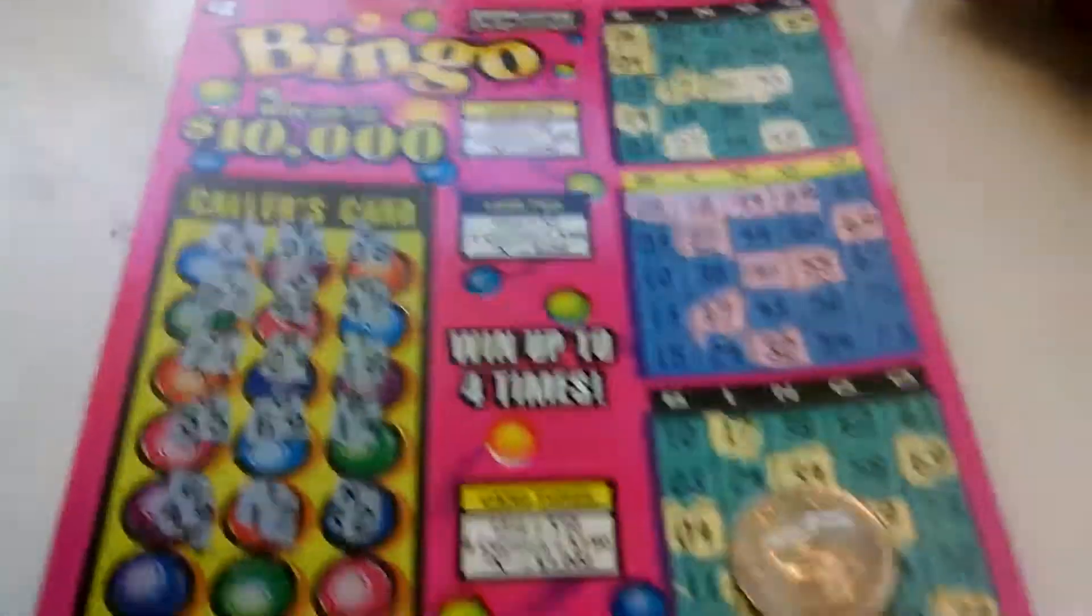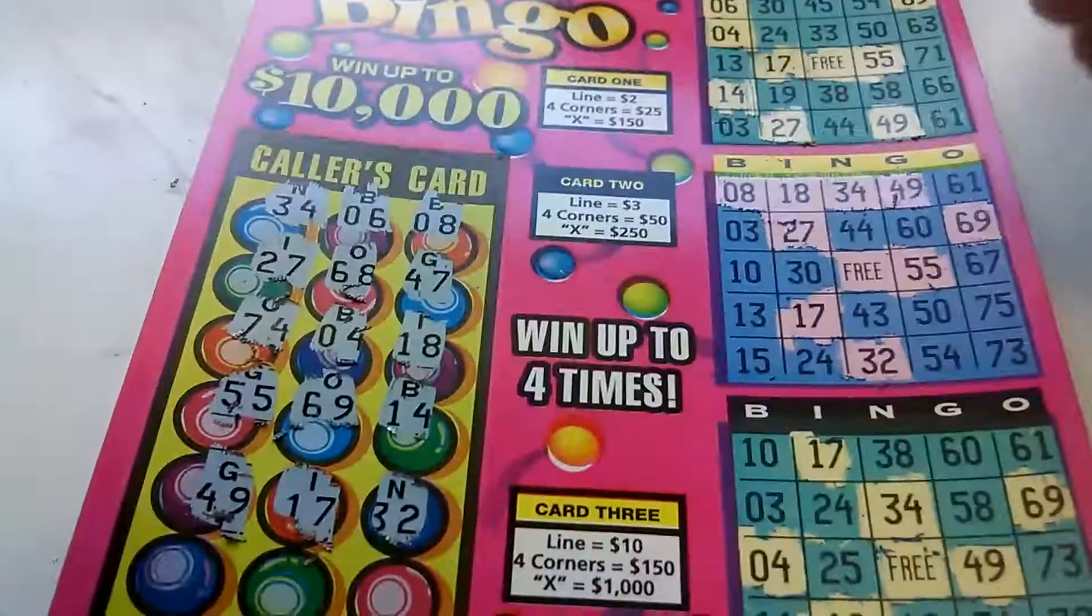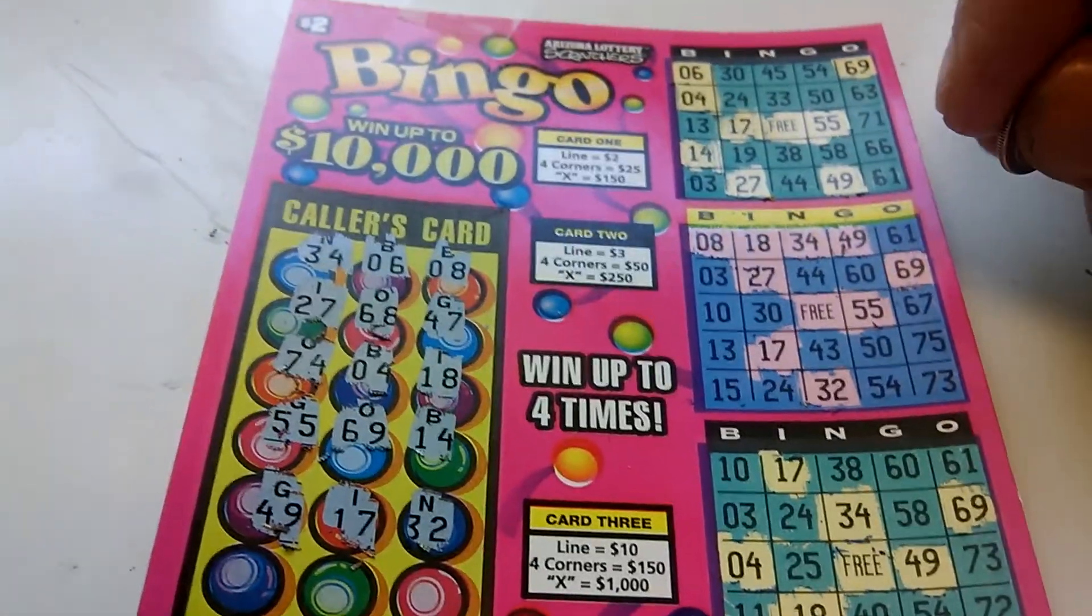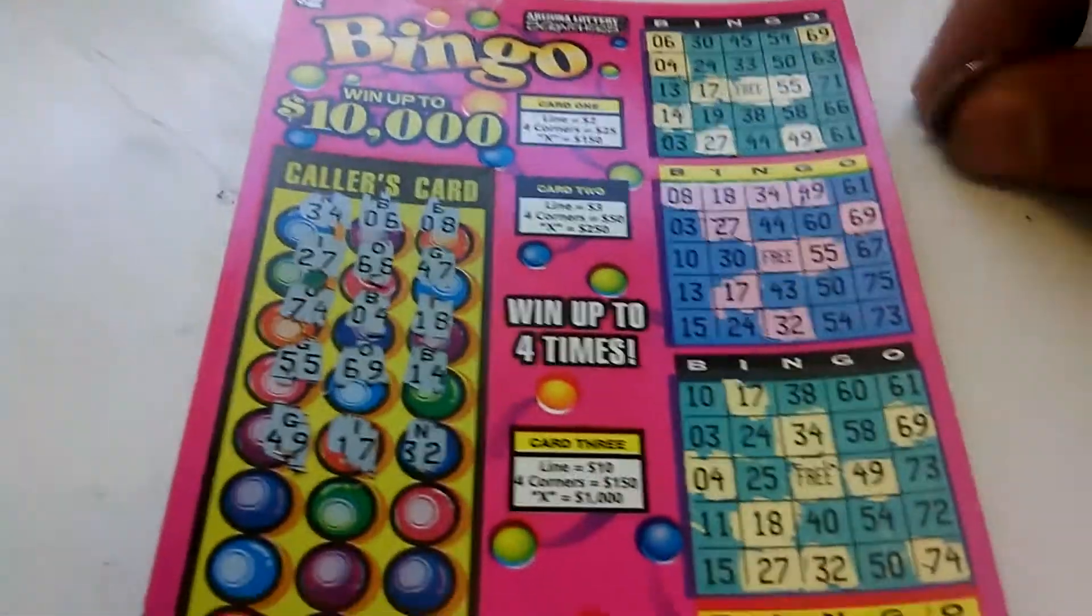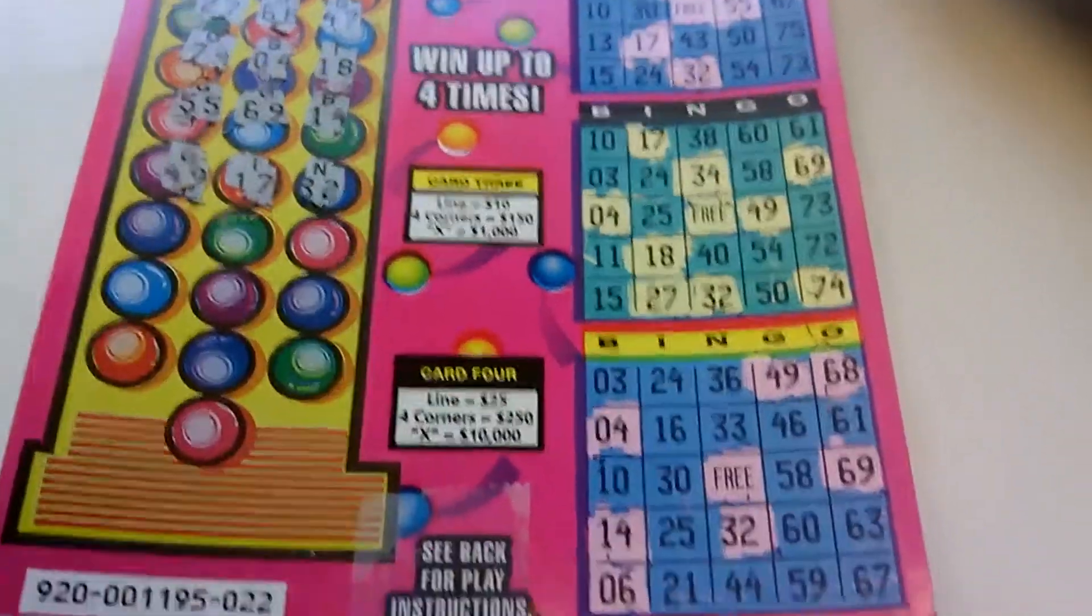What's going on everybody? Another $2 bingo from the Arizona Lottery Elevator Geek. 7.62 Dream Big Production is making this episode possible. Let's see if we can get them some big wins.